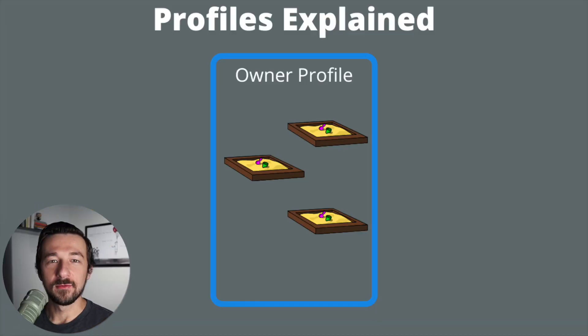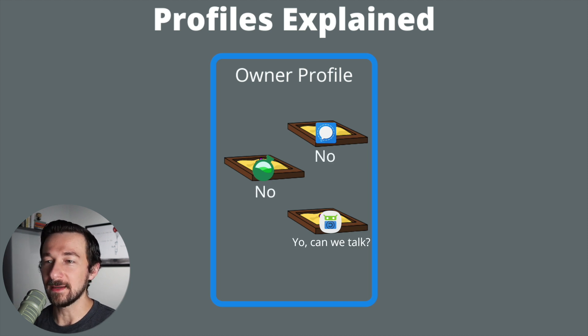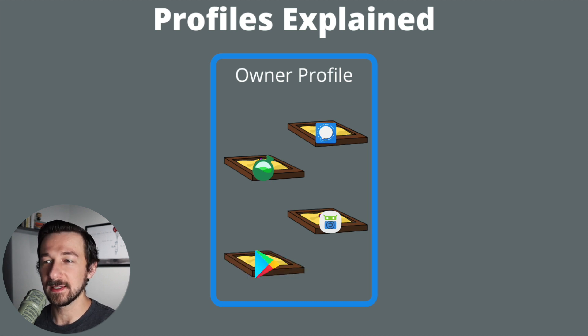Before we actually begin the install, the first thing you need to do is decide where you want to install these Google Play services. To help explain this concept I'm going to use a diagram. Here's an example of the owner profile you currently have installed on your phone. Each of these sandboxes on the screen represents an app. By default every app you install is sandboxed in Android, meaning these apps cannot communicate with each other unless you explicitly give permission. The first option is installing Google Play services in the owner profile in another sandbox — that is the easiest option, and all your apps will have the ability to use those services.